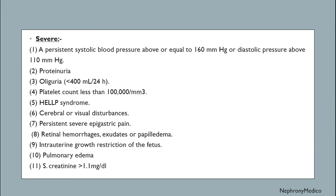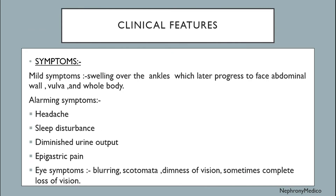Severe preeclampsia: persistent systolic blood pressure above or equal to 160 mmHg or diastolic above 110 mmHg, proteinuria, oliguria less than 400 ml per 24 hours, platelet count less than 1 lakh per mm³, HELLP syndrome, cerebral or visual disturbances, persistent severe epigastric pain, retinal hemorrhages, exudates or papilledema, intrauterine growth restriction of the fetus, pulmonary edema, and serum creatinine more than 1.1 mg/dL.